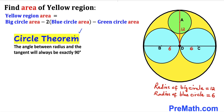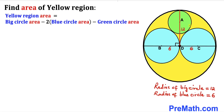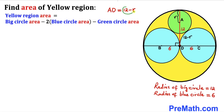Now let's recall the circle theorem: the angle between the radius and the tangent will always be exactly 90 degrees. We can see that this radius of the big circle is tangent to the blue circles, and these are the radii of the blue circles, so these angles are going to be 90 degrees. Let's assume the radius of the green circle is lowercase r. The whole distance is 12 units, so the distance AD is going to be 12 minus r.